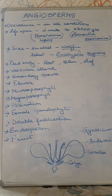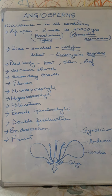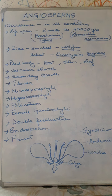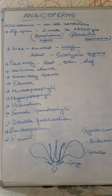The ovary develops into the fruit — different types of fruits include true fruit, false fruit, and aggregate fruit, which we will study later. Triple fusion is the formation of endosperm when a haploid and diploid cell fuse together to form the triploid endosperm. The ovary develops into the fruit and the ovule develops into the seed. These are important parts of angiospermic plants.